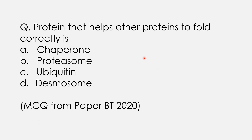This is a question for my next video — from the biotechnology paper 2020, MCQ type, only one answer correct. The question is: the protein that helps other proteins to fold correctly is — chaperone, proteasome, ubiquitin, or desmosomes? We will discuss this in my next video. You can mail me the answer or write it in the comment section.